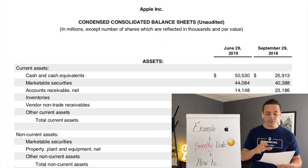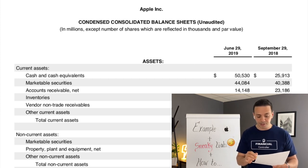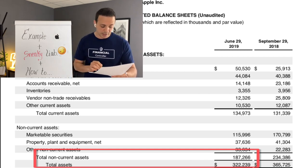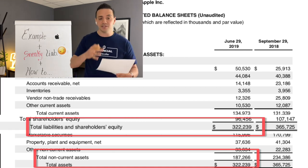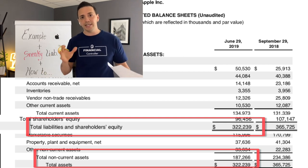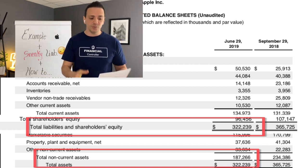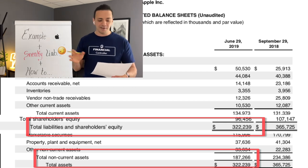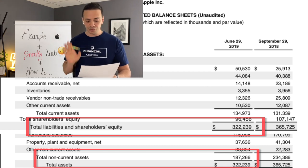These two totals need to match — they need to equal. The total assets as of the most recent period is $322 million, compared to total liabilities and shareholders' equity, also $322 million. Obviously, if you notice on any balance sheet that the two sides are not equal, you know there's a problem. But Apple is not going to make that rookie mistake — assets will always equal liabilities and shareholders' equity.